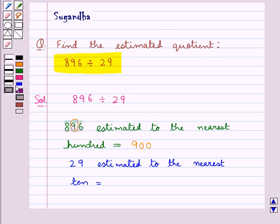we'll see its ones digit which is 9, it is more than 5. So we'll increase the tens digit by 1 and replace the ones digit by 0. So 29 estimated to the nearest 10 is equal to 30.